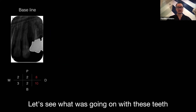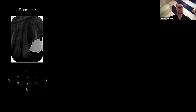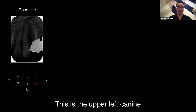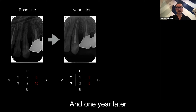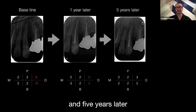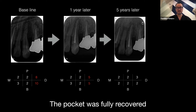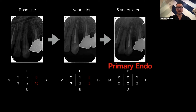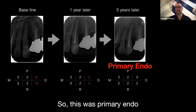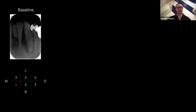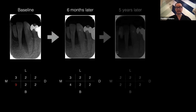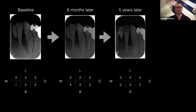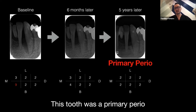Let's see what happened with these teeth. For the upper left canine: this was the baseline, one year later, and five years later — the pocket was fully recovered. So this was a primary endo lesion. For the lower left canine: this was baseline, three months later, and five years later. This tooth was a primary perio lesion.